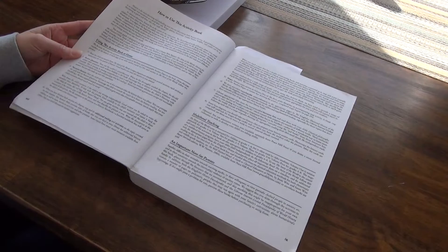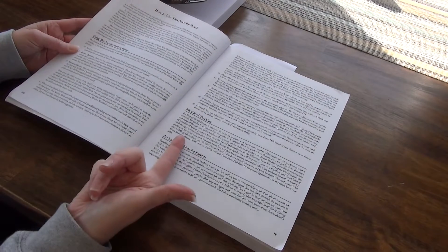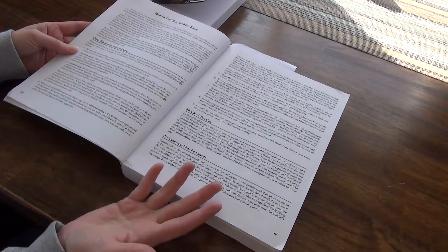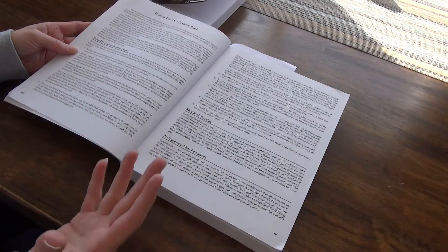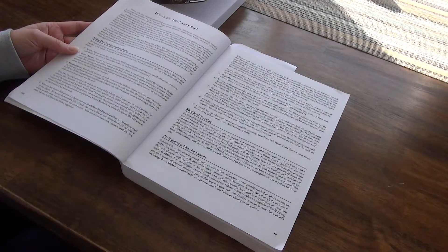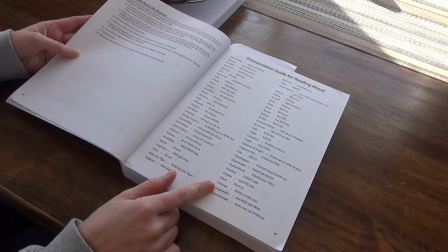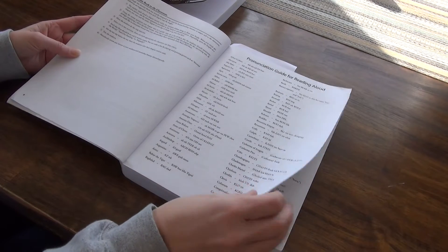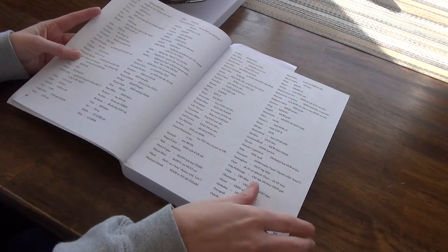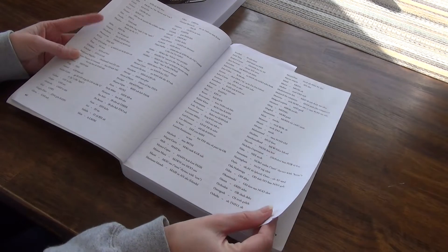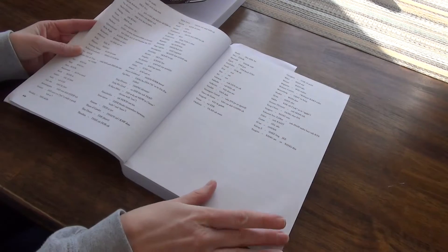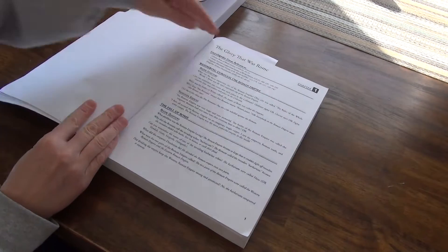And then we have how to use this activity book. It goes into multi-level teaching. You don't have to use it just for one grade. This could definitely be a whole home subject. And different pronunciation guides, which is really handy sometimes. And then we get into the first chapter.